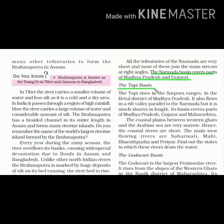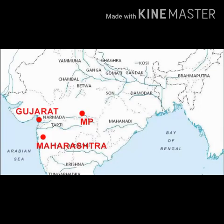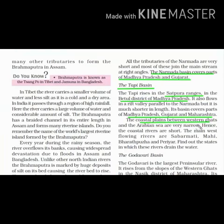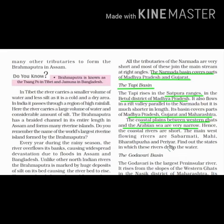Now we will read about the Tapi Basin. The river Tapi rises in the Satpura range in Betul district of Madhya Pradesh. This river flows parallel to river Narmada. Narmada covers Madhya Pradesh and Gujarat, but Tapi covers Madhya Pradesh, Gujarat, and Maharashtra. The coastal plains between Western Ghats and the Arabian Sea are very narrow — we are talking about the continental shelf. Due to this reason, there are more ports on the western side than the eastern side of our country, because on the eastern coast the continental shelf is very long, making it not ideal to build a port.